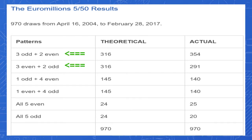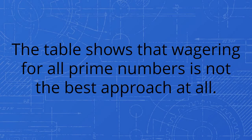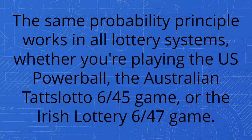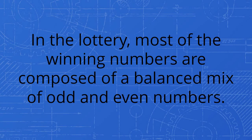If you are seriously considering winning the jackpot, then choose to play both the three even two odd or the two even three odd combination pattern. The table shows that wagering for all prime numbers is not the best approach at all. The same probability principle works in all lottery systems, whether you're playing the U.S. Powerball, the Australian TattsLotto 6/45 game, or the Irish Lottery 6/47 game. In the lottery, most of the winning numbers are composed of a balanced mix of odd and even numbers.